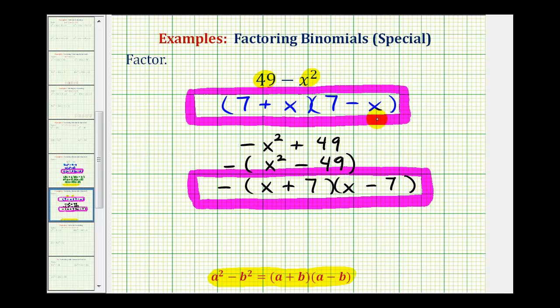Even though these two factored forms do look different, they are equivalent and they are also both correct. Of course, if we wanted to verify this, we could multiply these out to make sure that we do get 49 minus x squared in both cases. I hope you found this example helpful.